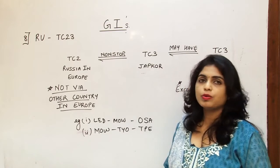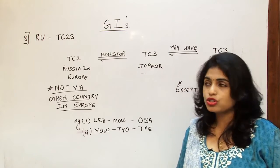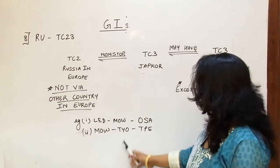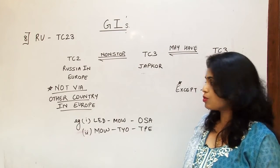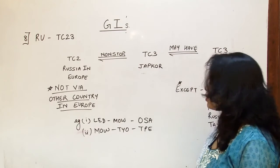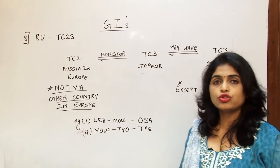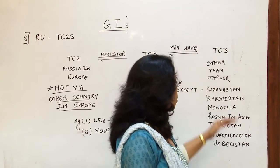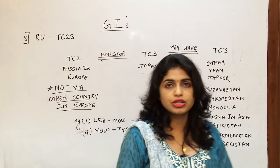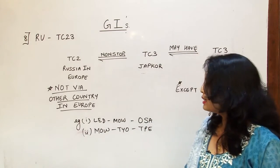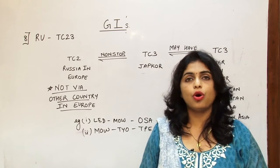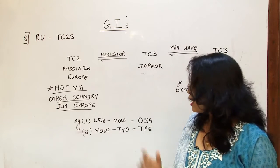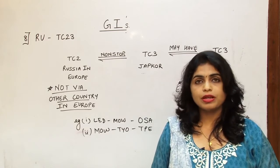The second example is Moscow, which is in Russia in Europe, going non-stop to Tokyo in Japan, and then further ahead to Taipei, which is not part of any of the exceptional countries. So this is also a clear example of the RU global indicator.